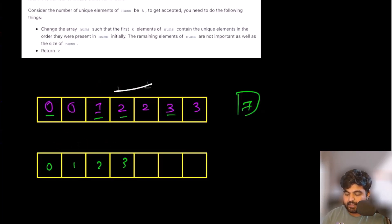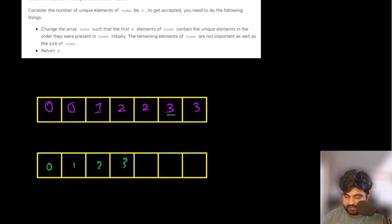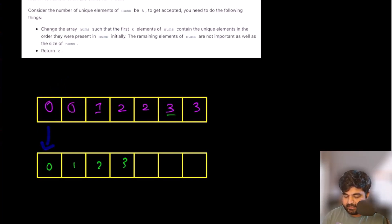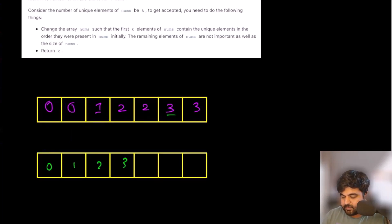What is the brute force way to do this problem? The brute force way is pretty simple — we take one value at a time, check how many duplicates there are, add it, then keep repeating the same process. If it's a duplicated entry, we move on to the next value. This approach is guaranteed to give you the answer but it's an O(n²) solution, so brute force is always not a good way to go.